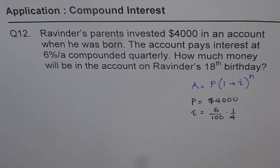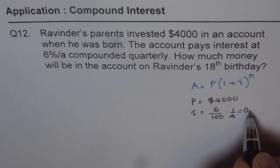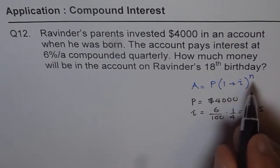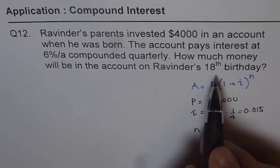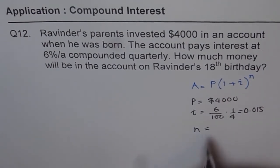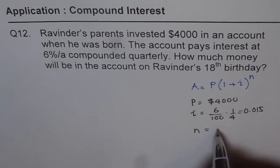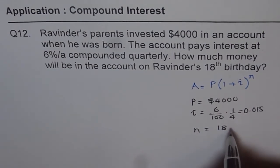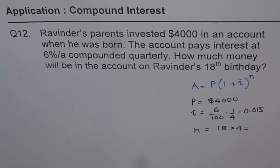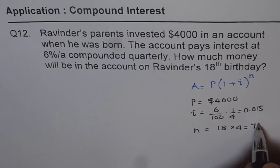Let's calculate this value which is 6 divided by 400. So 6 divided by 400 equals 3 over 200 which is 0.015. And the number of compounding periods: 18th birthday means interest will be compounded 18 times 4, so those are the number of compounding periods. 18 times 4 equals 72, so N is 72.